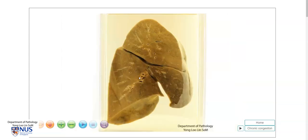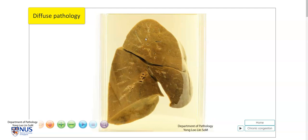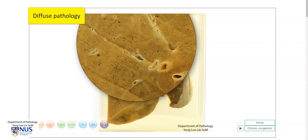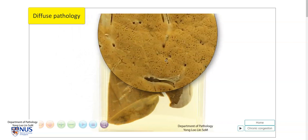Turning back to the cut surface, we can see that the lung is diffusely involved by an abnormal process. When I say diffusely, I mean that all the lobes and pretty much everywhere in the parenchyma shows the same abnormality and we do not see a localized or a discrete space-occupying lesion such as a mass or a cavity. So this is a diffuse pathology involving all three lobes of the lung.